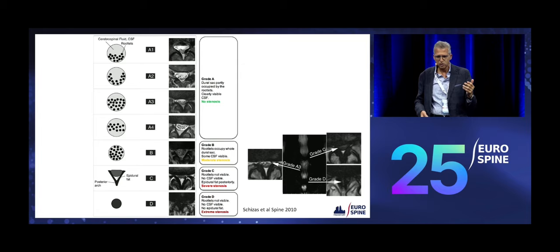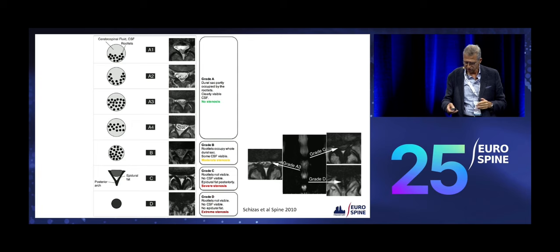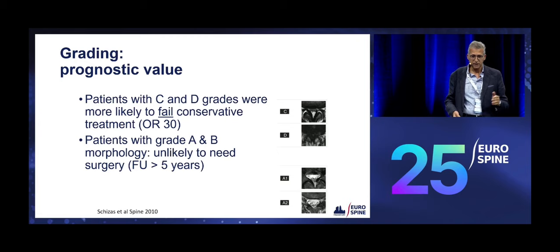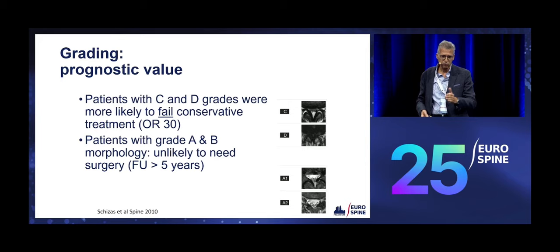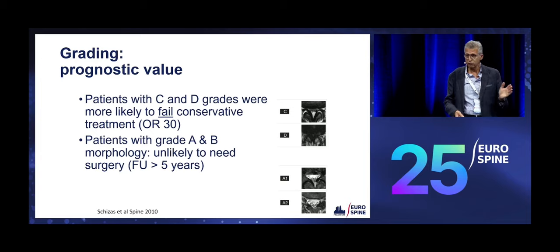Grade D is very similar but worse because you don't even see epidural fat — we call this extreme stenosis. We found back in 2010 that there was a prognostic value in our operated patients. We didn't have this grading when we decided to operate those patients, but we found that patients graded C and D were more likely to fail conservative treatment. The odds ratio was 30, which is very significant, though these were patients sent to surgeons.